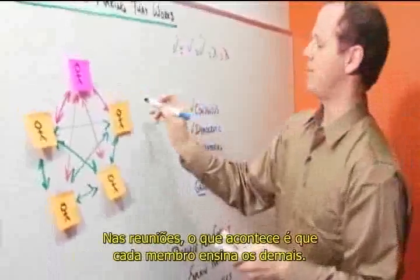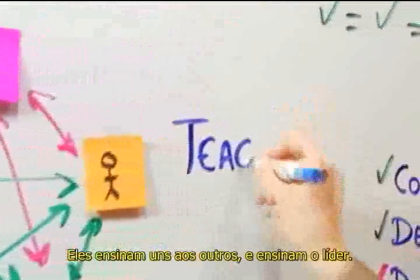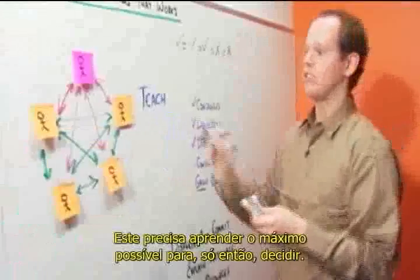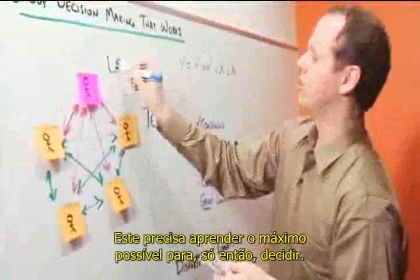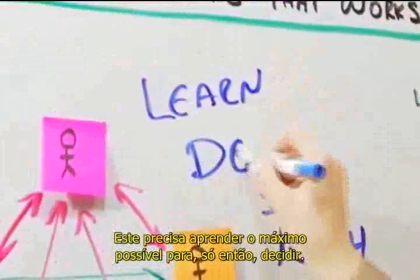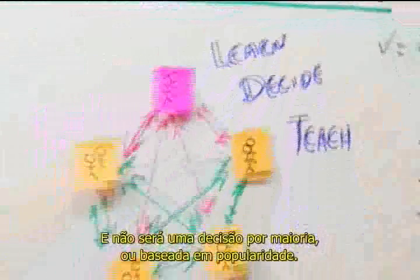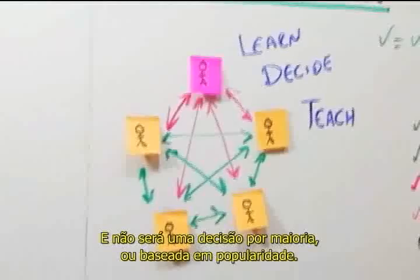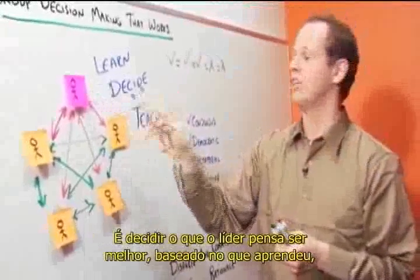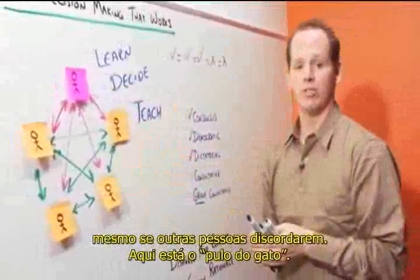In that meeting process, what happens is all of the members of the meeting teach — they teach to each other and they teach to the decider. The decider's job is to learn as much as possible, and then ultimately to decide. And that's not decide the majority decision or decide based on popularity — it is to decide what he or she thinks is best based upon what he or she has learned, even if other people don't agree.